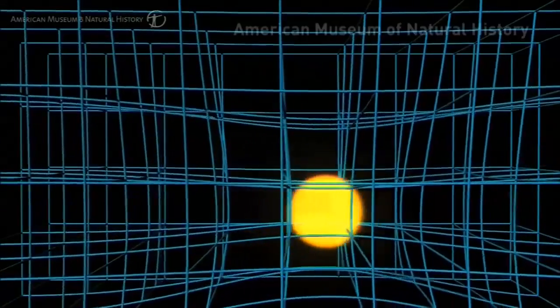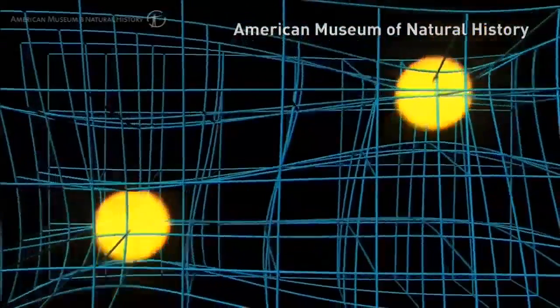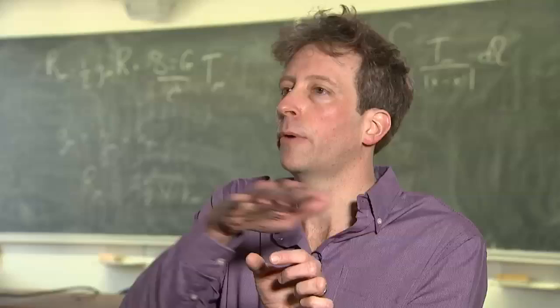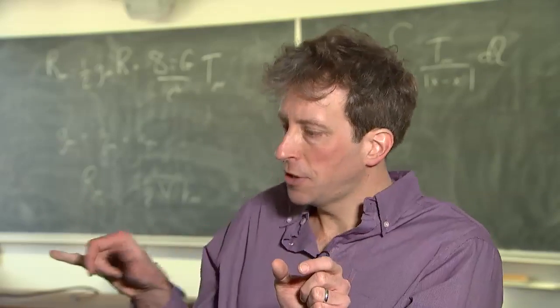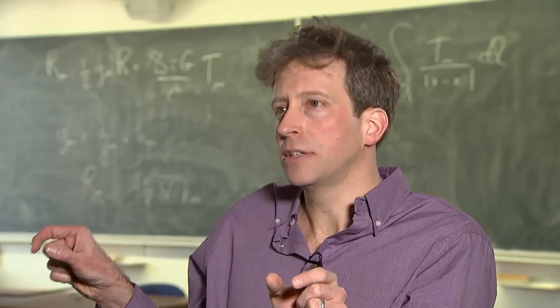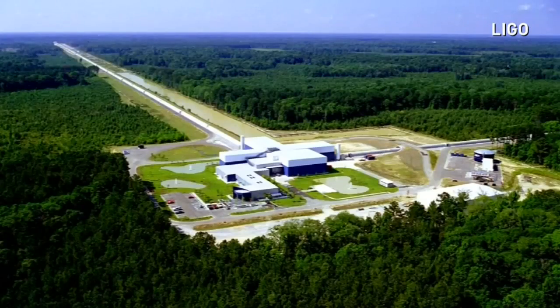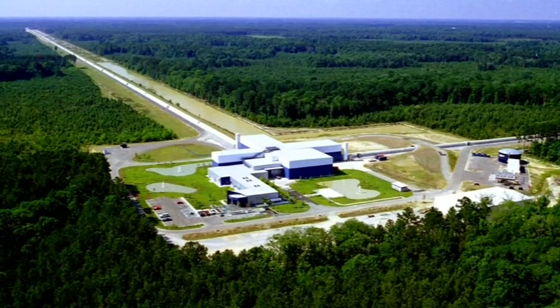As a gravitational wave passes through space and time, it changes the distance between two objects that are freely sitting in space and time. What LIGO and gravitational wave detectors try to do is create objects that are suspended in such a way that they're free to move in some directions. When a gravitational wave moves past and changes space and time, it actually changes the distance between these objects. LIGO measures that distance change by bouncing a laser beam between these masses.